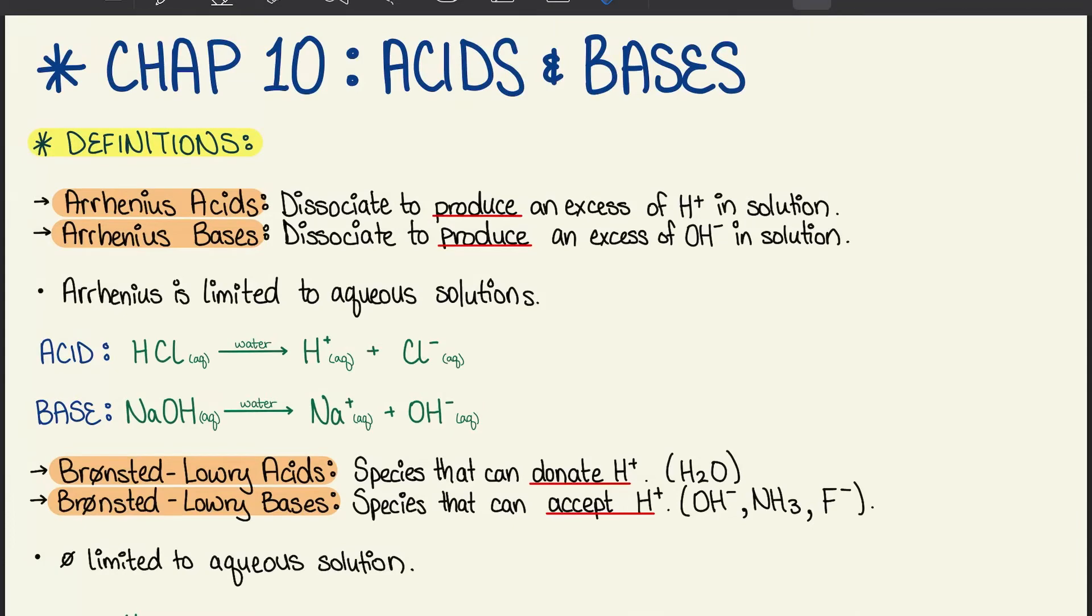Welcome back to General Chemistry Chapter 10 where we're talking about acids and bases. We'll start with section 10.1 where we discuss the definitions. First, we have Arrhenius acids and bases.